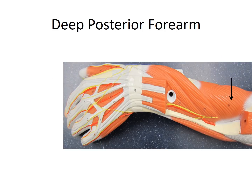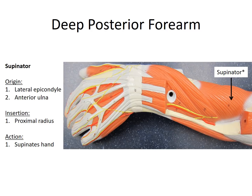Still looking at deep muscles, now on the posterior forearm, we have the supinator — we need to know origin, insertion, and action. This muscle originates on the lateral epicondyle, which makes sense: its antagonist is the pronator teres, which originates on the medial epicondyle — opposite sides of the humerus for antagonist muscles. There is also a second origin on the anterior ulna; pick one and stick with it. The insertion is the proximal radius, and the action is to supinate the hand.